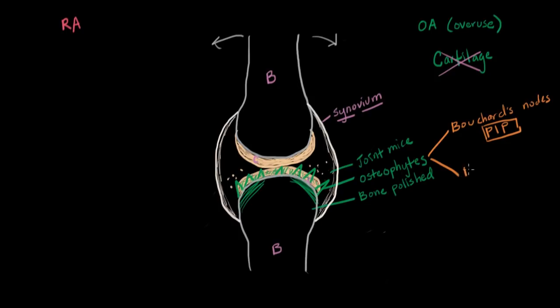And then the other ones are called Heberden's nodes. And these are going to be in the distal interphalangeal joints, which are going to be the last knuckle closest to the fingertips. The difference between them is the location, but it's basically the same principle.